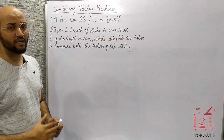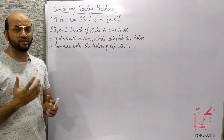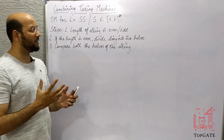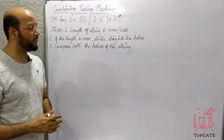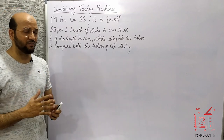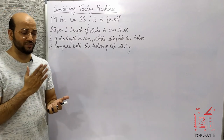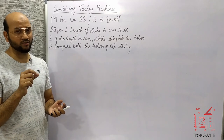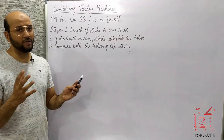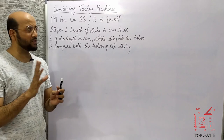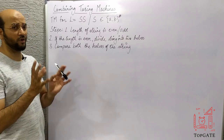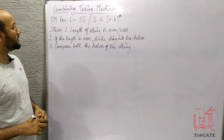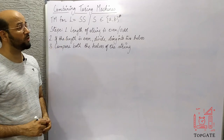Sometimes when we have to design a Turing machine and that designing is so complex that we cannot do it in one go, we divide this complex task into subtasks. One by one we complete all those tasks, and finally all those tasks will be incorporated into a single Turing machine — the final product. In this one, we have to design a Turing machine for the language L equal to SS.